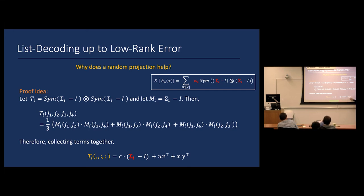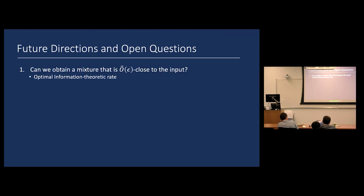Each term in the symmetrized expression, when multiplied by a random Gaussian along two modes, gives the parameter we care about plus some low-rank error. I already showed why recovering parameters up to low-rank error suffices — you can brute-force the low-rank correction and get the actual parameters. Once you have the list, you run a tournament at the end — a standard technique in statistics — to find the best hypothesis in the list.